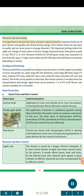Maturity and Harvesting: It is important to harvest the fruits at the proper stage of maturity. Immature fruits are of poor flavor and quality and shrink during storage. Over-mature fruits are also poor in quality and are more prone to storage disorders. The important picking indices for apple are: change of seed color to brown; change of ground color from green to paler red; TSS of 11 to 14.5; firmness of flesh 16 to 18 lb/sq inch; easy separation of fruit from the spurs (T-stage); starch index; and 90 to 180 days from full bloom to maturity depending on variety.